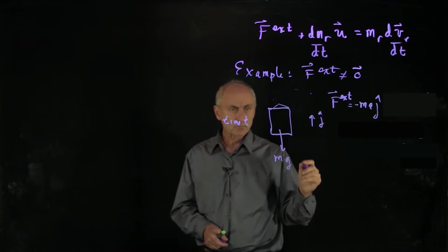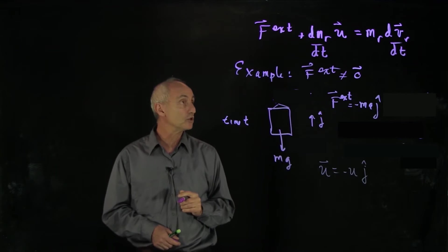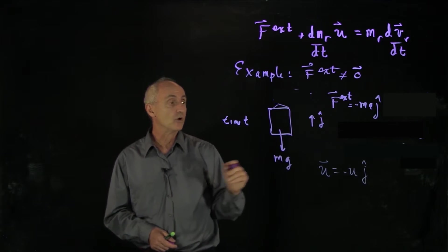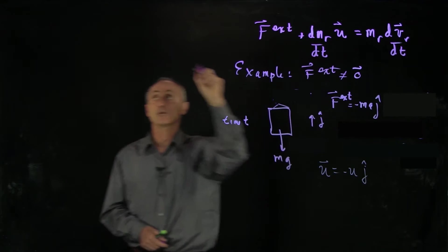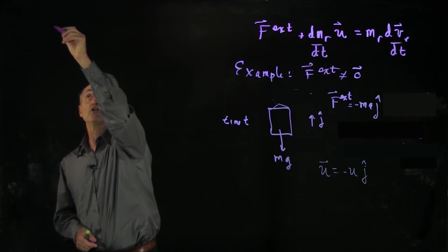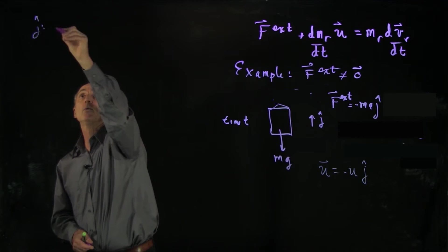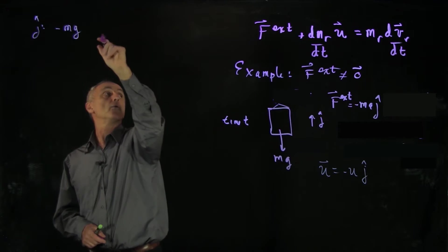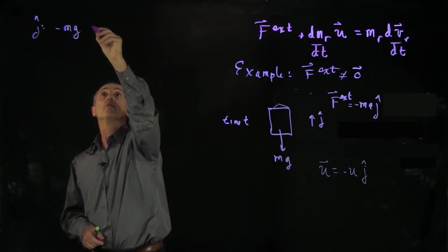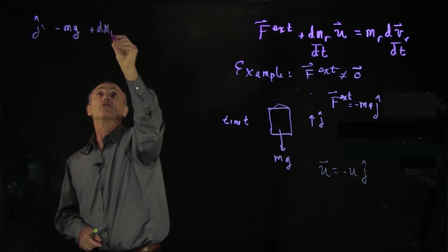We wrote the exhaust velocity as minus mu j hat. And so if we write this now as a vector equation in the j hat component,